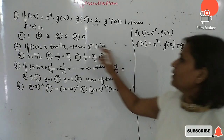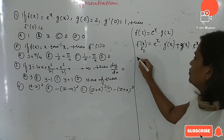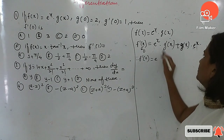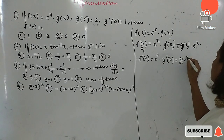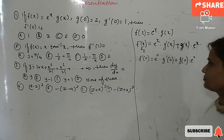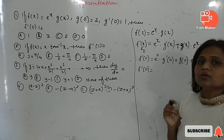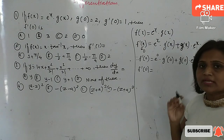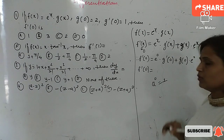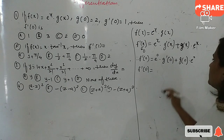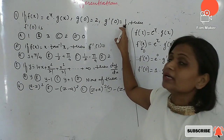Derivative of e^x is itself e^x. Now to find f'(0), replace x by zero: f'(0) = e^0 · g'(0) + g(0) · e^0. Now e^0 — e has the particular numerical value 2-point-something — and by log analysis, any number raised to the power zero is always one. So e^0 equals one, giving 1 · g'(0).